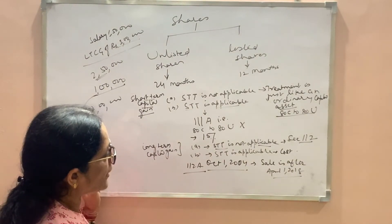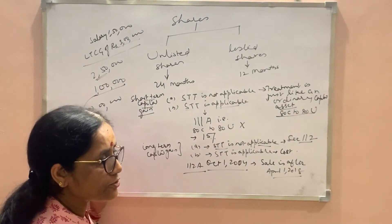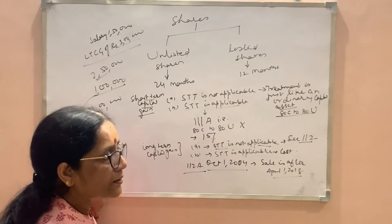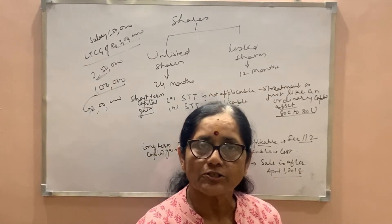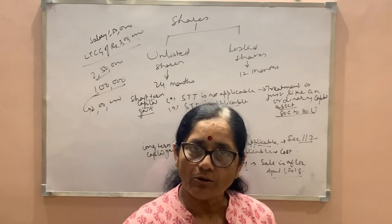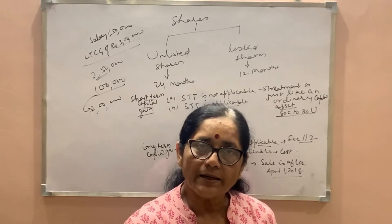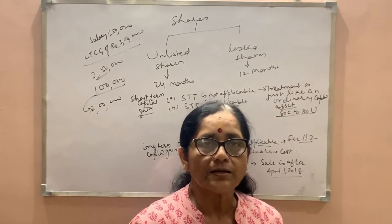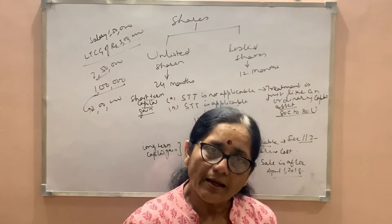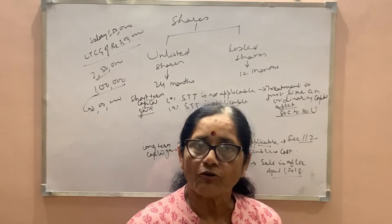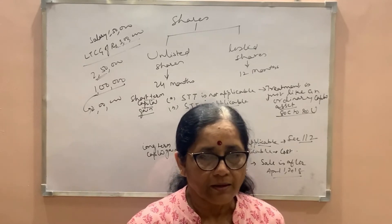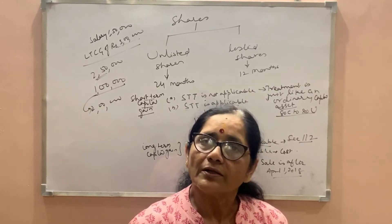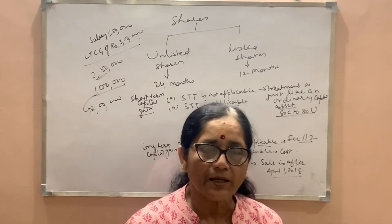In case of section 112A, the assessee gets the benefit of exemption of rupees 1 lakh, and on the remaining figure, tax is calculated at the rate of 10%. But four conditions must be satisfied: one, there should be long-term capital gain on shares; the security transaction tax should be paid at the time of purchasing as well as at the time of selling. The assessee can get the benefit of exemption of rupees 1 lakh on long-term capital gain, and the remaining figure will be taxable at a flat rate of 10%. No deduction from 80C to 80U will be available.